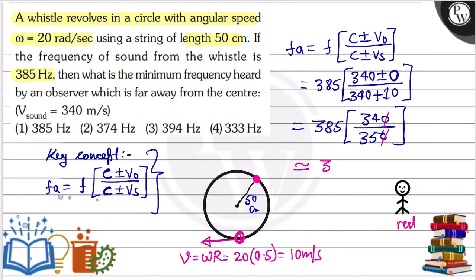The value will be somewhat less than 385. Approximately, this will be 374 Hz. If you look at the options, since the numerator is 34 and denominator is 35, it's slightly less than 385. So the correct option is option number 2. Okay, thank you.